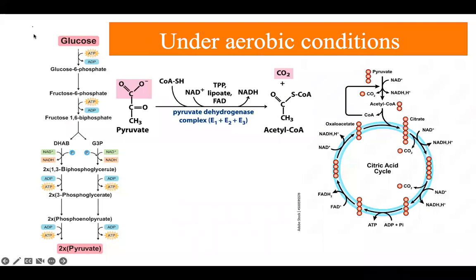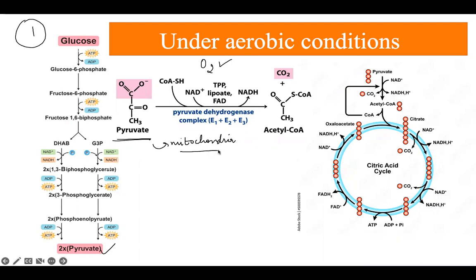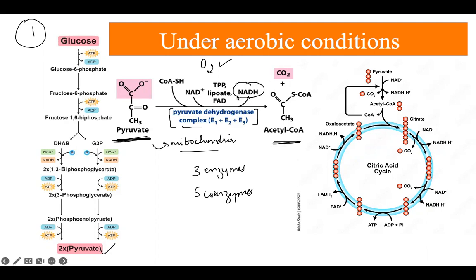First, let's look at the case where aerobic conditions are present — oxygen is available. In the presence of oxygen, the pyruvate formed by glycolysis is transported into the mitochondria, where it is acted upon by a special multi-enzyme complex known as pyruvate dehydrogenase multi-enzyme complex. This complex consists of three enzymes and five coenzymes, and is responsible for converting pyruvate into acetyl-CoA. At this step, one molecule of NADH is also produced.